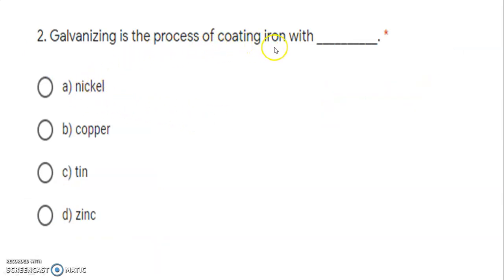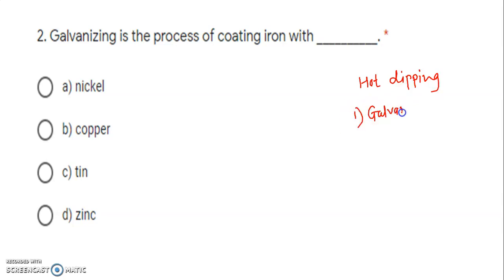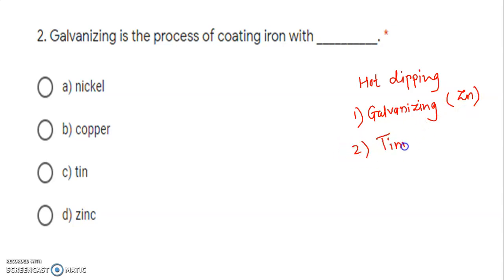Next: galvanizing is the process of coating iron. We have studied the hot dipping method. There are two hot dipping methods — one is galvanizing and another is tinning. In galvanizing, we give the coating of a more active metal, that is zinc. In tinning, we give the coating of tin (Sn). Since galvanizing is asked, the metal used is zinc. Option D is correct.